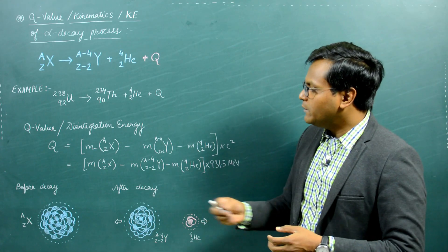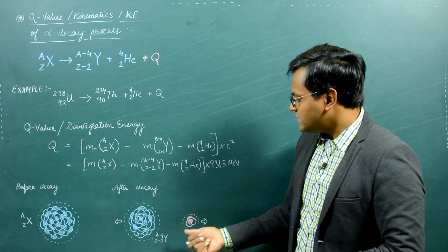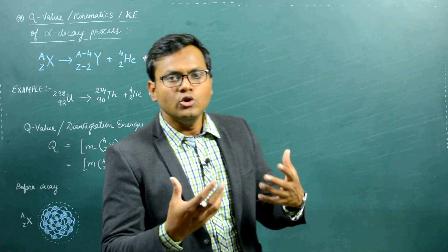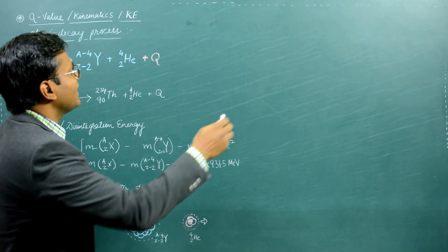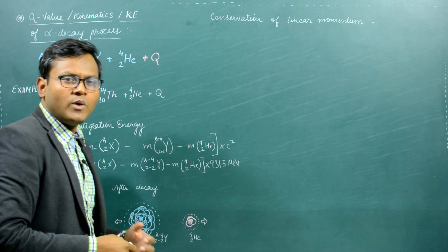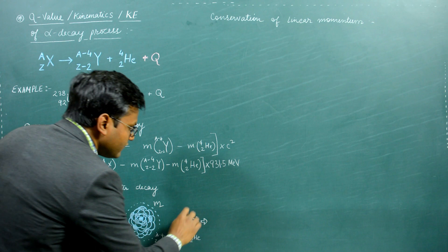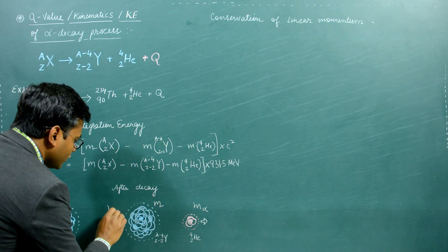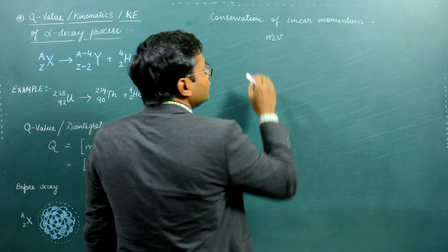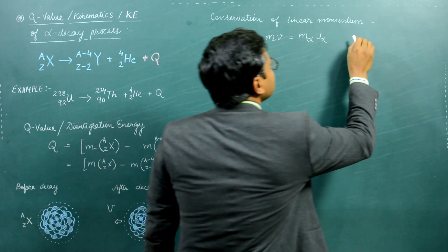Suppose before the decay process takes place the parent nucleus is at rest, and after the decay process the alpha particle is emitted from the nucleus. The daughter nuclei will also experience a reaction force. We can apply conservation of linear momentum: since only two particles are involved, their momenta will be exactly equal and opposite. If the mass of the daughter nucleus is M with velocity V, and the mass of the alpha particle is M_alpha with velocity V_alpha, then M·V equals M_alpha·V_alpha.